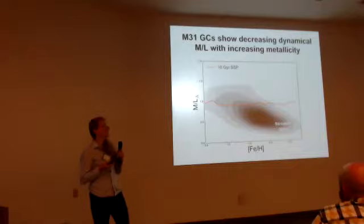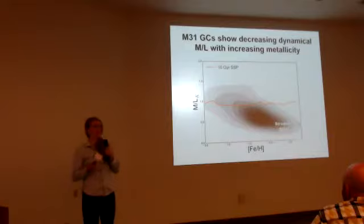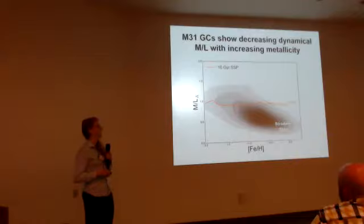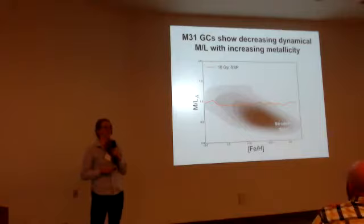There are also open questions about the dynamical properties of compact stellar systems. Here I'm showing the dynamically determined mass-to-light ratios for M31 globular clusters taken from Jay Strader's work, and you can see a distinct decreasing trend with metallicity in these clusters. For comparison, I've put a 10-gigayear SSP with a Kroupa IMF, and you can see that this trend is not predicted from the conventional stellar population models.